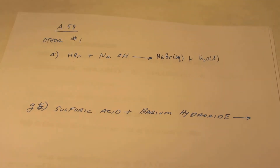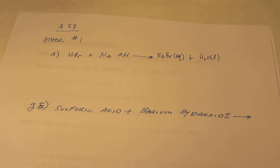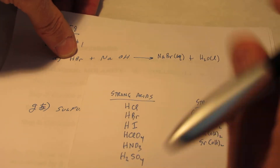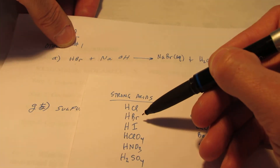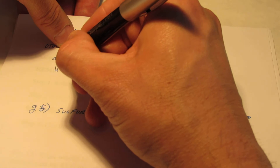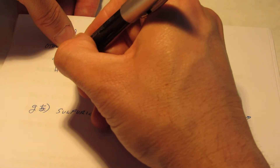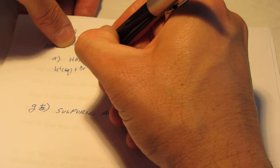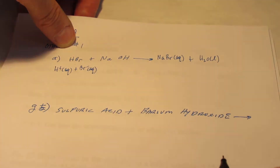And it's balanced. Now let's do the ionic, and from that we can get the net ionic. Remember, if it's a strong acid, we dissociate it. So HBr is on our list of strong acids. Let's split that up into H⁺ and Br⁻, because that's what strong acids do — they dissociate.